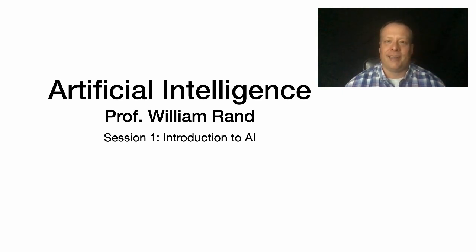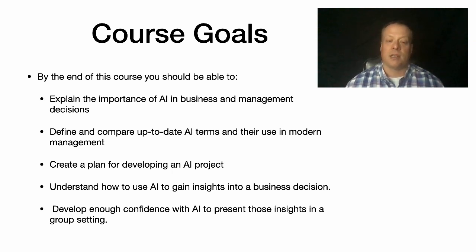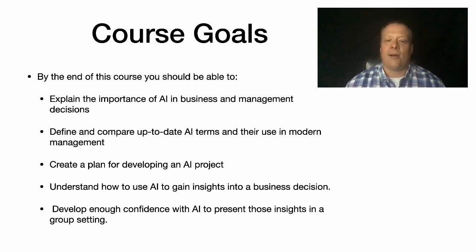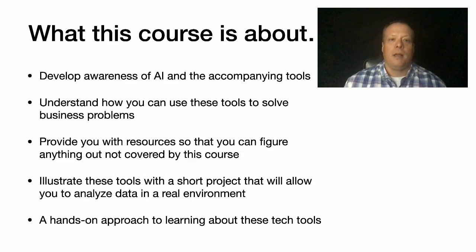We're going to go through all the material through these series of YouTube videos and cover the basic ideas of how to apply artificial intelligence to business and management problems. The course goals are that by the end of this course you should be able to explain the importance of AI in business management decisions, define and compare up-to-date AI terms, create a plan for developing an AI project, understand how to use AI to gain insights into a business decision, and develop enough confidence with AI to present those insights in a group setting.